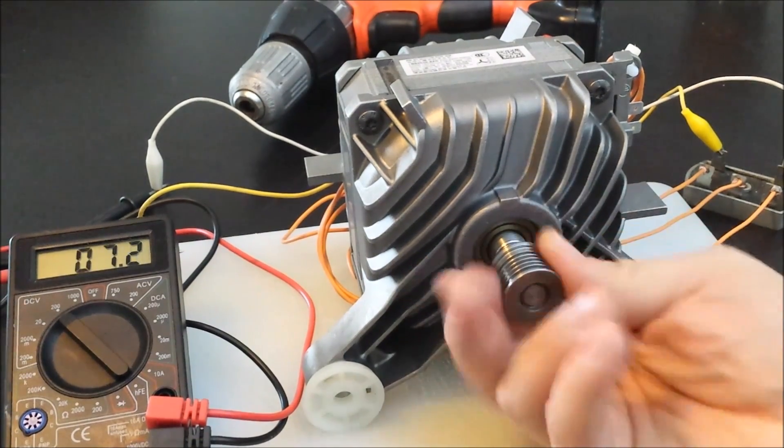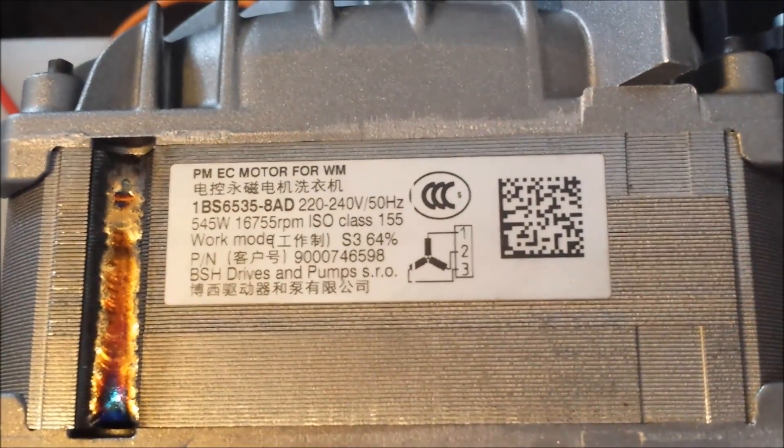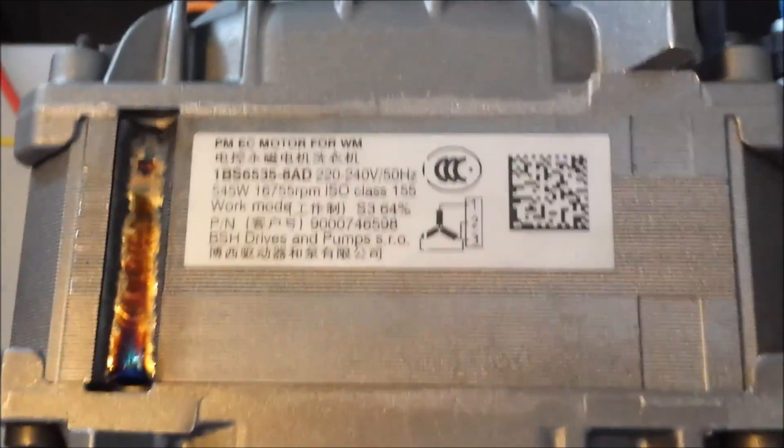Just wanted to show you the model number. Remember this is a Siemens IQ 700 washing machine I've scrapped this motor from. And as you can see it's a permanent magnet motor.